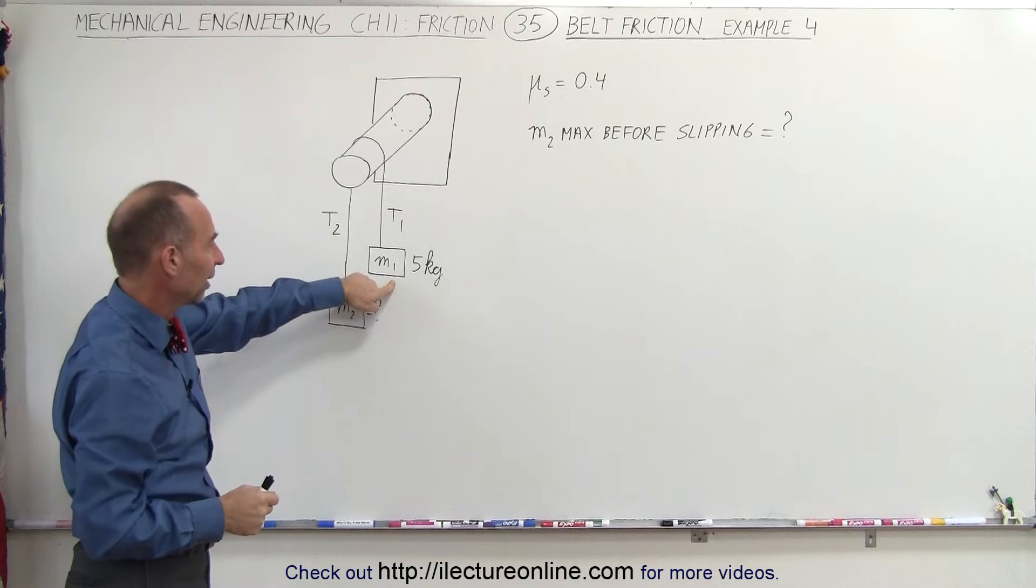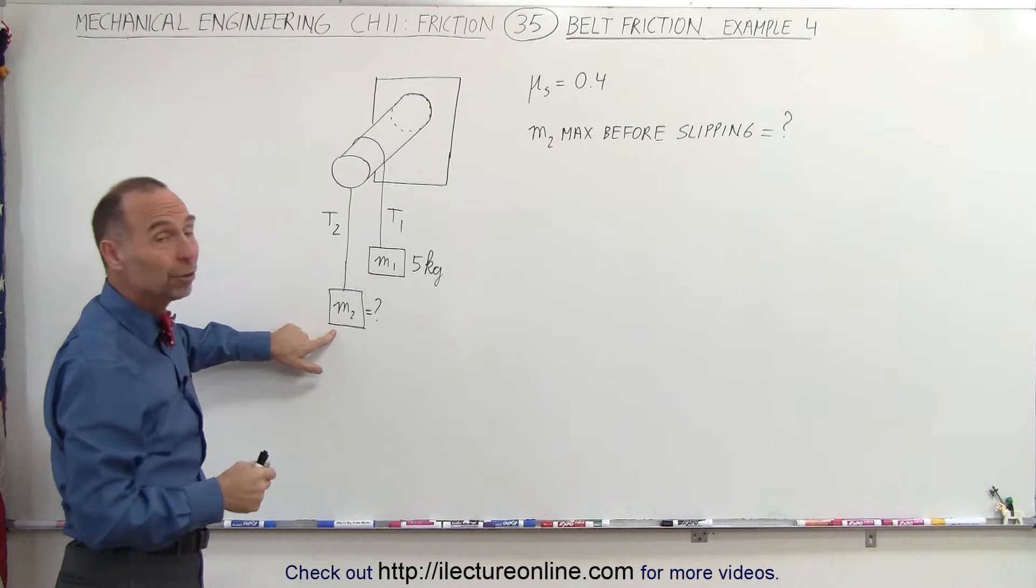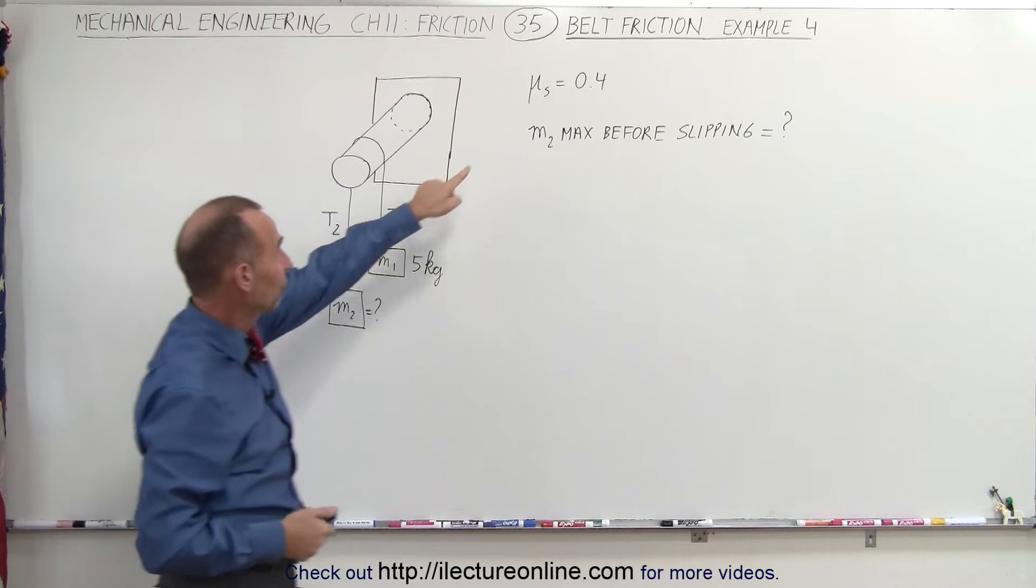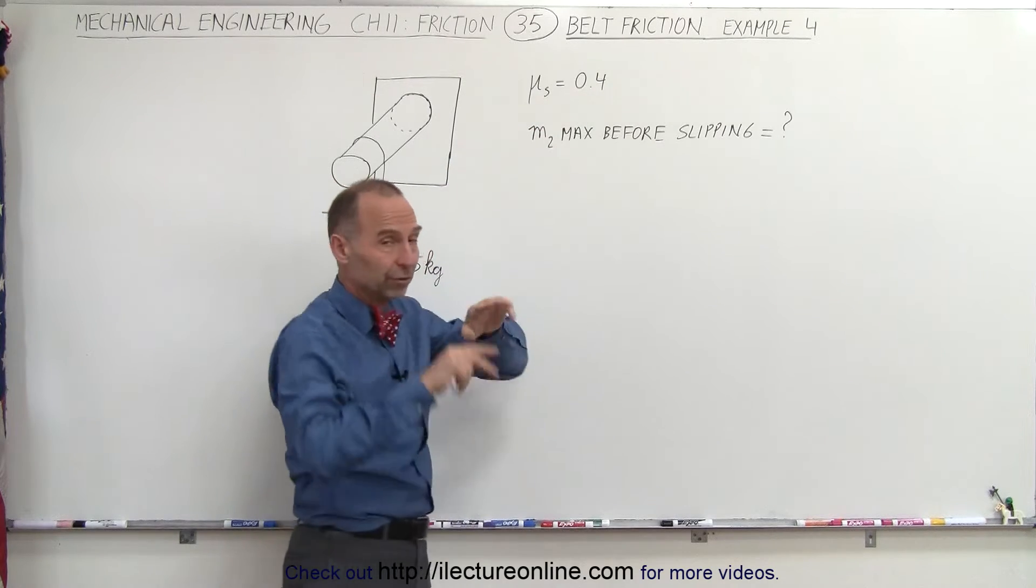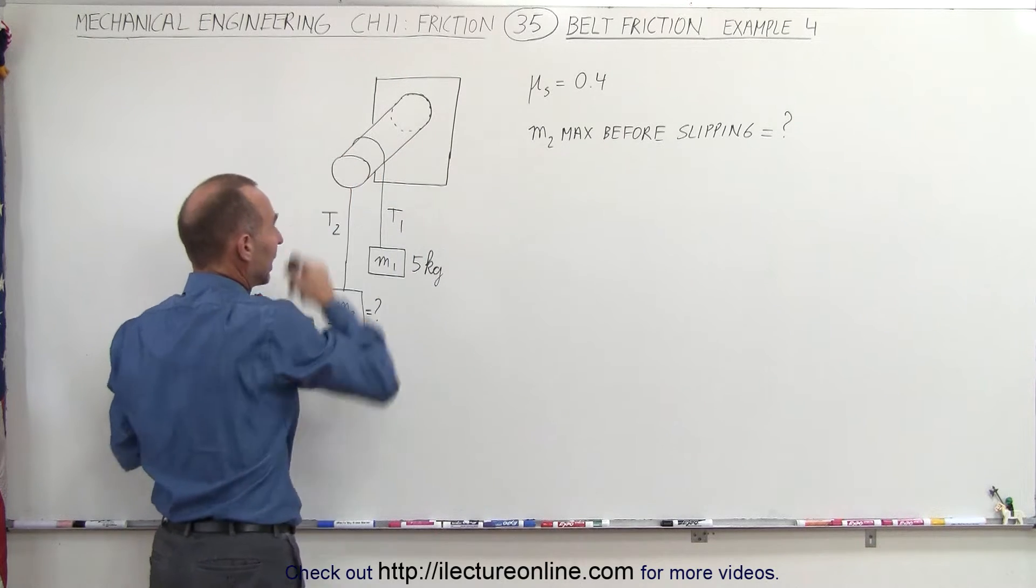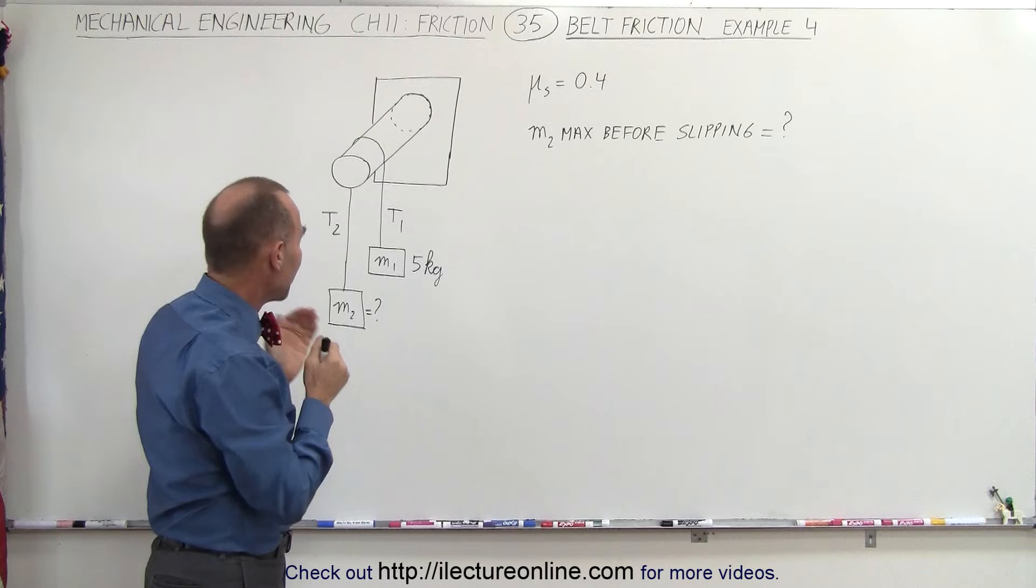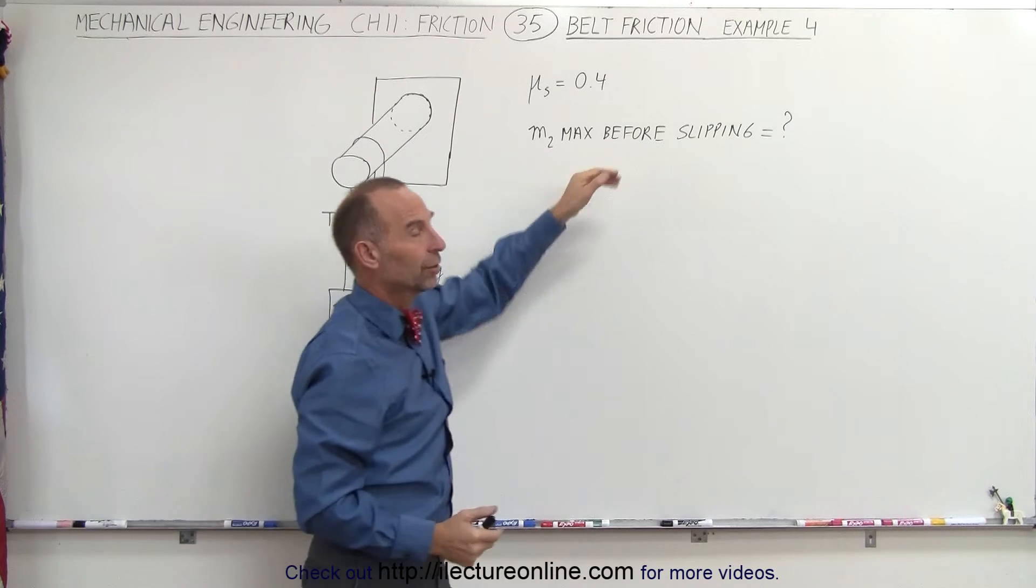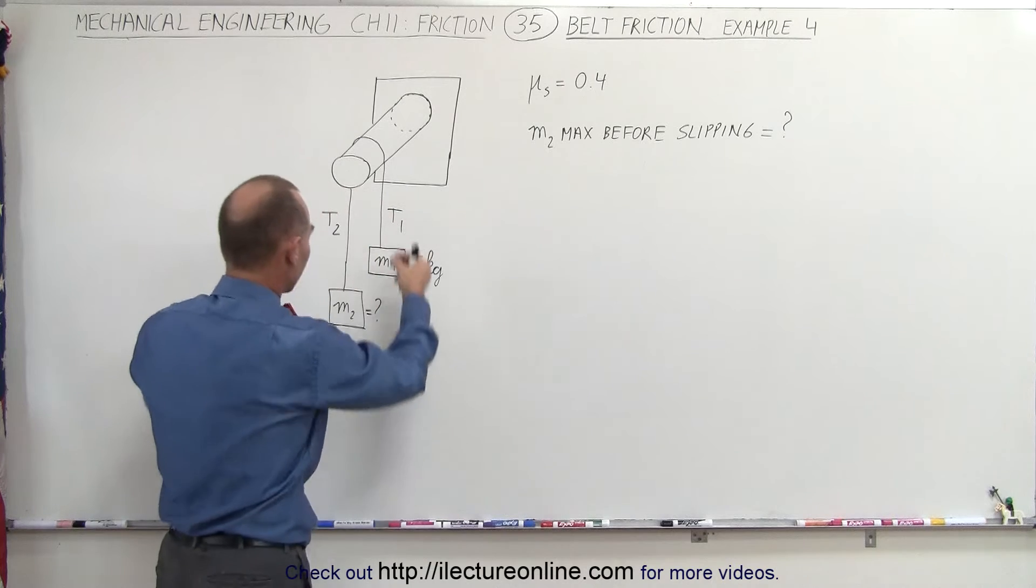We have a known mass on one side, 5 kilograms, and an unknown mass m2 on the other side. Assuming that the coefficient of static friction is 0.4 and the wrapping of the rope would be one half the complete circle around the peg here, what would be the maximum mass you can place on this side before they both start slipping, before they start moving?